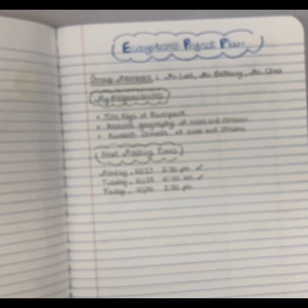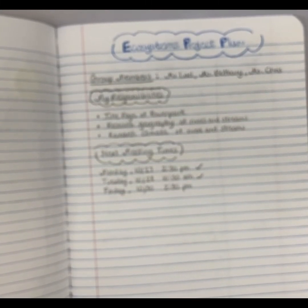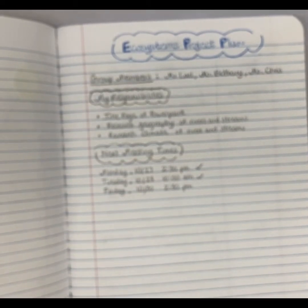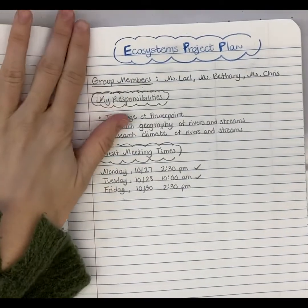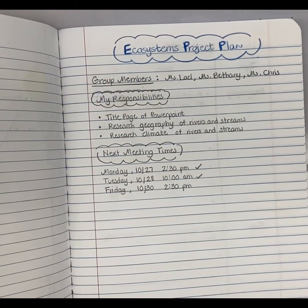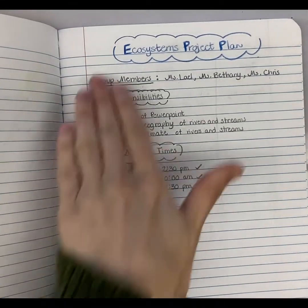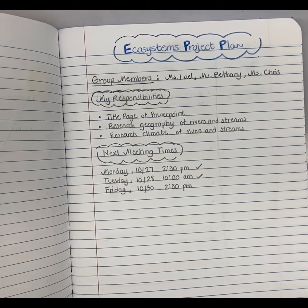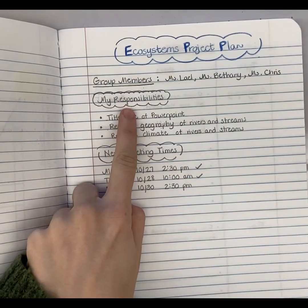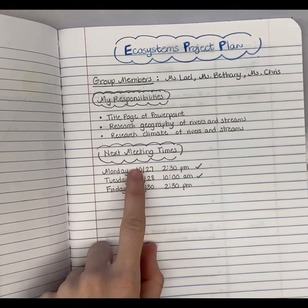For your ecosystem project plan, I would like to show you a way to organize those notes and kind of organize the information that you are going to need to gather, because there's a lot of it. The first thing I'd like you to do is in a journal — whether it's your science journal, or any journal you have, or even a plain piece of paper — you're going to make a project plan page. The project plan page is where you're going to keep track of who your group members are, what your group responsibilities are, and when you are meeting with your group.